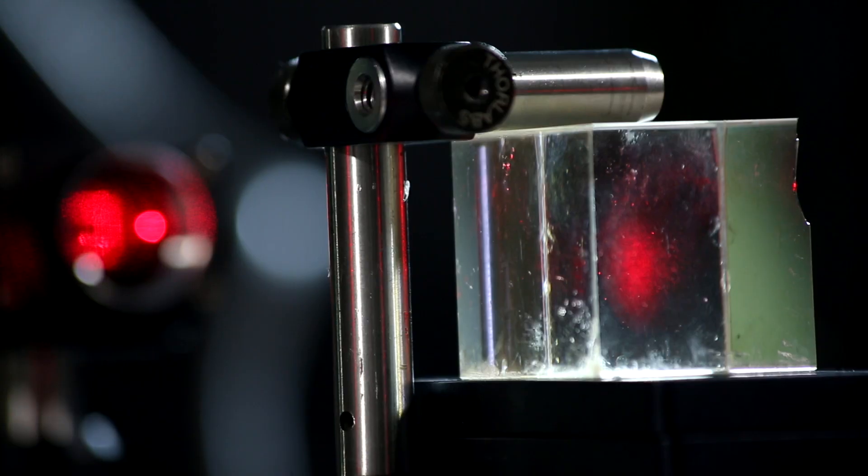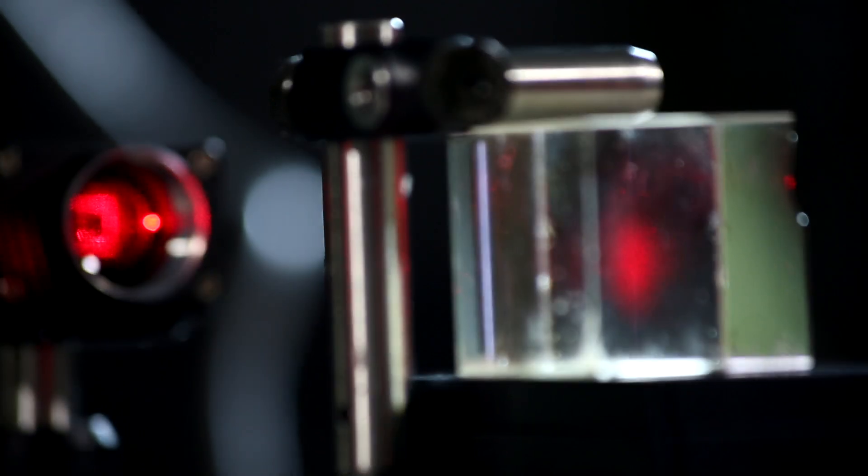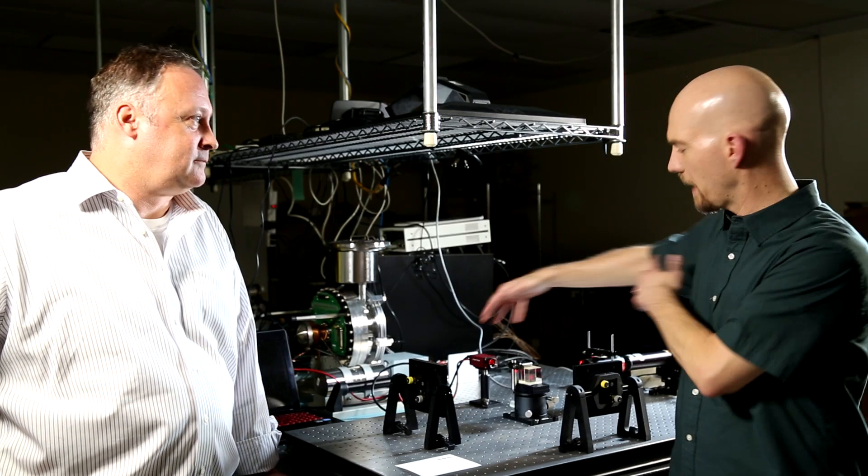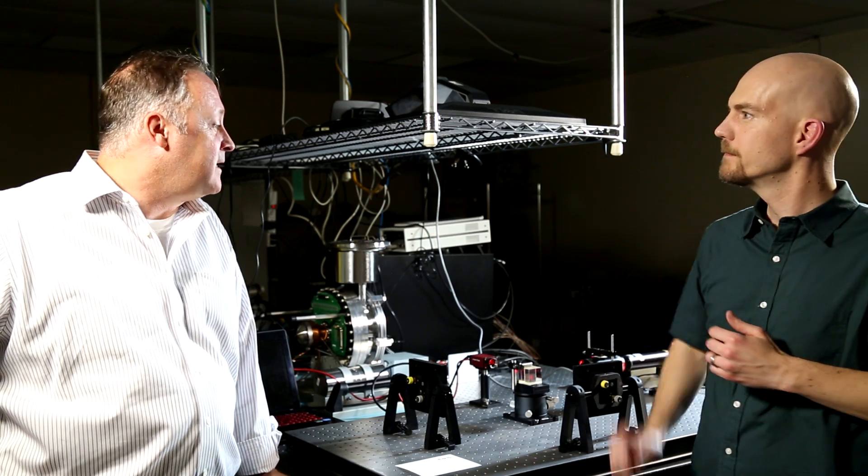They hit the mirrors, and they come back, and then they combine through the beam splitter, and then they go together to the camera. Beam splitter splits off, bounce, bounce, comes back together, goes to the camera. So we see light.